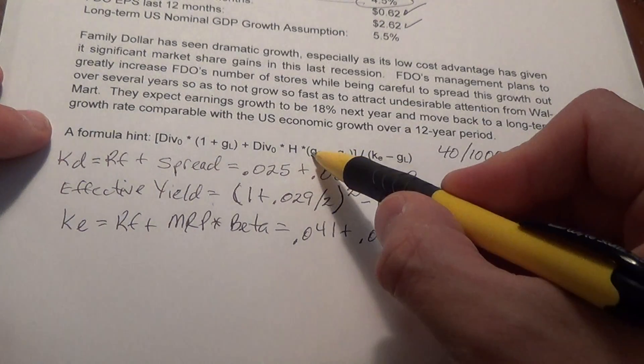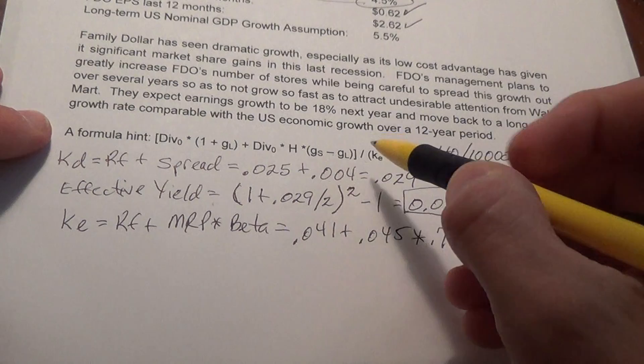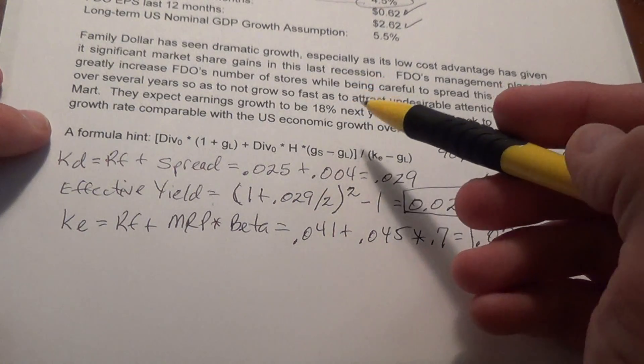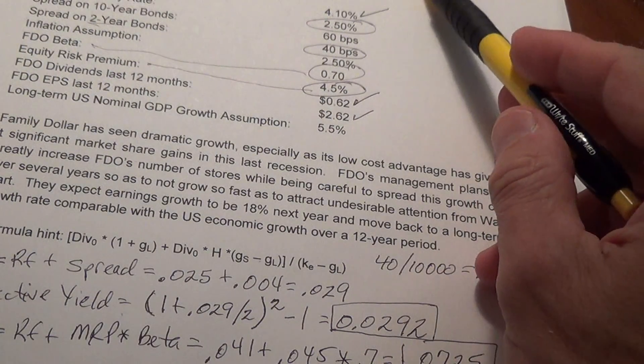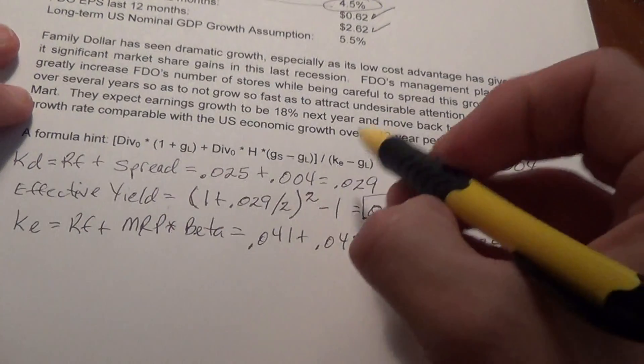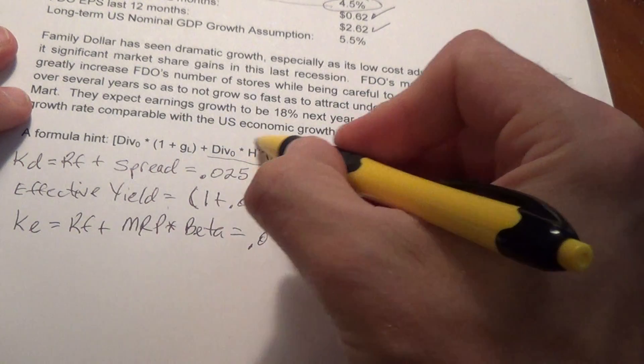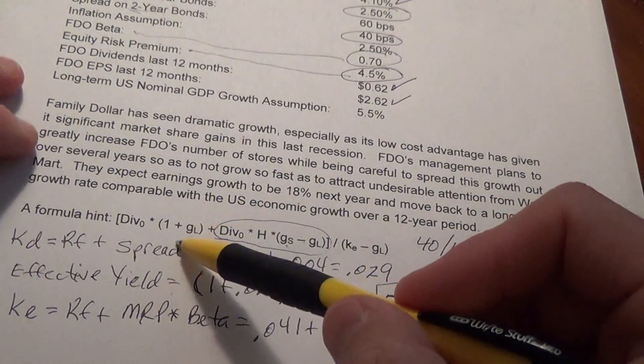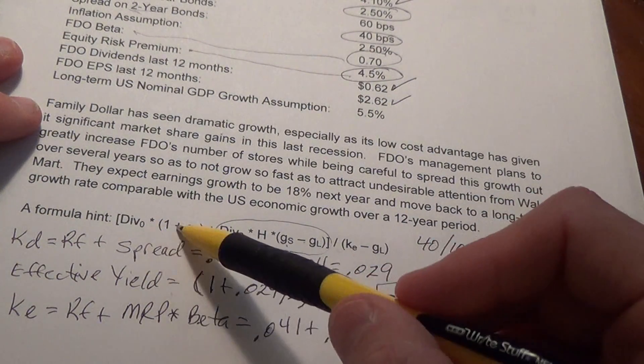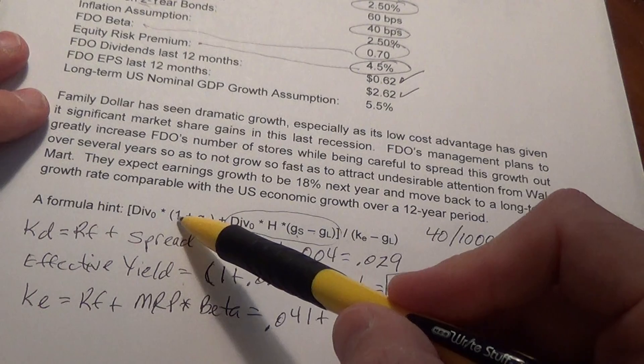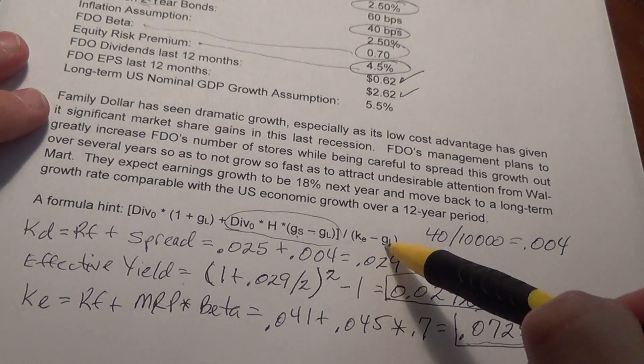Now the H model has two growth rates, but when you use the constant growth dividend discount model, the two growth rates are the same. So this whole part of the formula just cancels out. The dividend discount model formula is dividend zero times one plus the growth rate divided by KE minus G. So that's the constant growth.